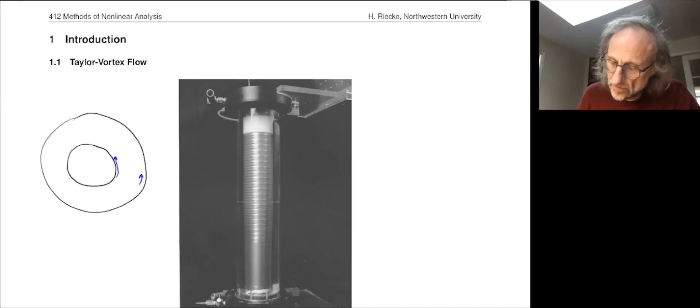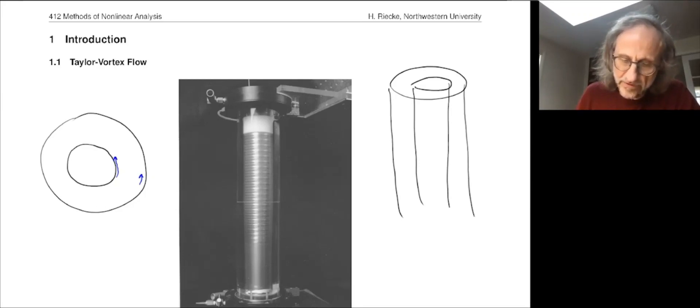then you get not just the fluid flow around the cylinders, but also in sort of a vortical structure, or donut structure. Let me sketch that here. So you have the fluid has to go out someplace and in someplace else, and so you get these vortices.